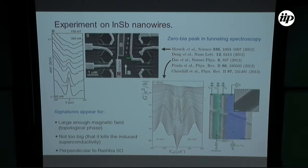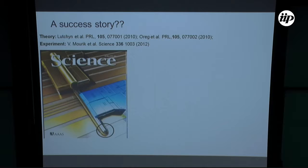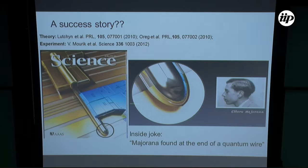They see a signature consistent with the theory, but the question is: is this a success story? They had the theory, the experiment, and made the cover of Science. There's an inside joke: Ettore Majorana vanished on a boat trip from Palermo to Naples — nobody ever heard of him again, with some conspiracy theories saying he fled to Argentina. Leo Kouwenhoven and his postdocs inserted a picture of Ettore Majorana at the end of the wire on the magazine cover, which was only discovered after it was printed. The inside joke is that they found Majorana at the end of the quantum wire.